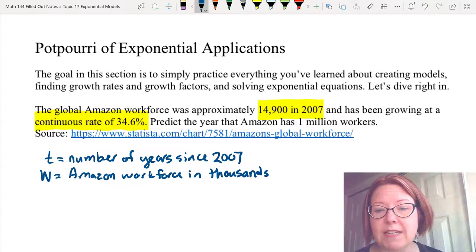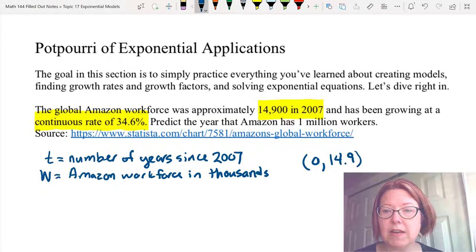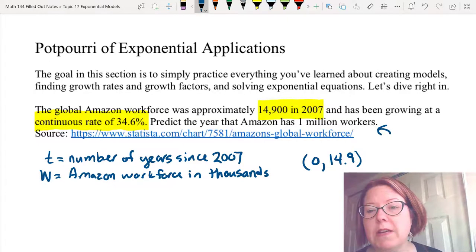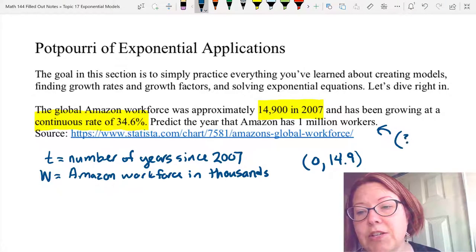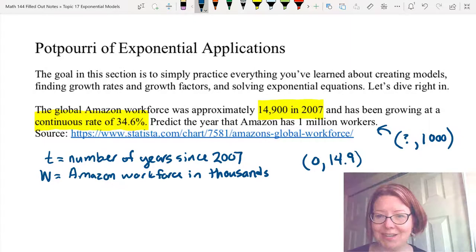I'm going to let it be in thousands just so our numbers don't get too big, which means that this point here is the point (0, 14.9) and the year that Amazon has 1 million workers would be something (?, 1000) because that's 1,000,000 workers.